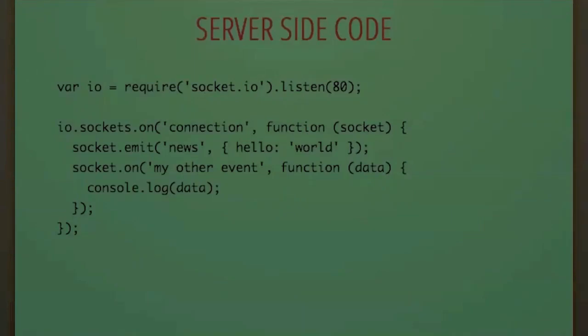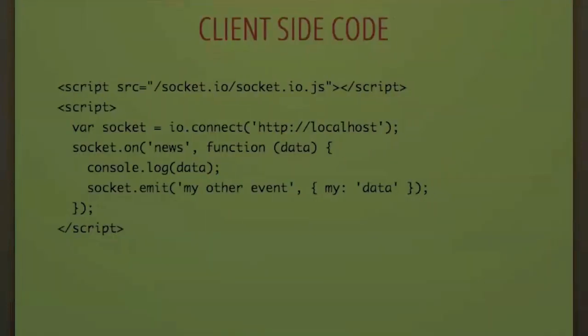The server-side code: you require the socket.io library and specify which port to listen on. On connection, you get a socket instance — a handle representing the client. You can send and receive messages on that handle, which is the bi-directional channel. You emit an event or say 'on event do something' — just like jQuery or JavaScript code. Very similar on the client side as well.